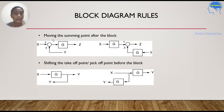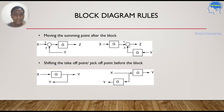Next is moving the summing point after the block. Here is your block and here is your summing point. You have to move this summing point after the block. When you move it after the block, the block G is added in that branch, so you will get G.